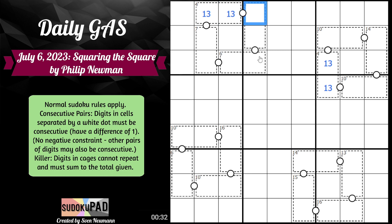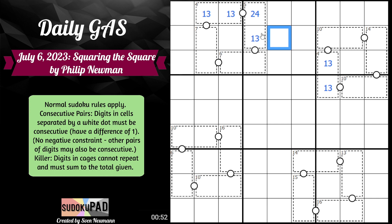Now, what does that do for us? This cell has to be either a 2 or a 4. If this is a 1, this is definitely a 2. But if it's a 3, it can be either next to a 2 or a 4. If that's the case, it needs to add up to 5. So for 2 to add up to 5 you need a 3, and for 4 to add up to 5 you need a 1. That means this must again be a 2 or a 4.